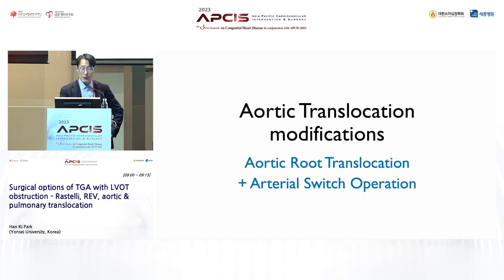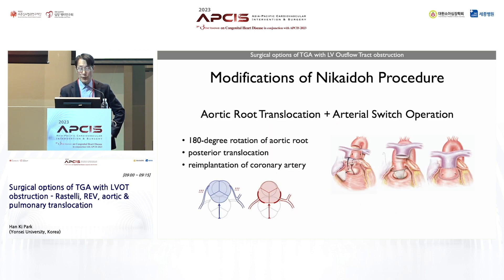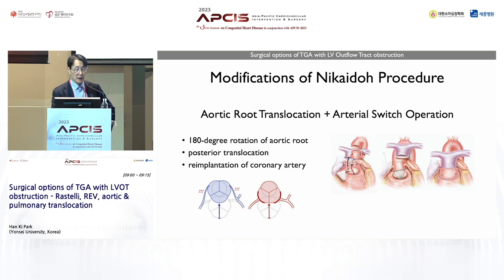There are some modifications of the Nikaido procedure. As mentioned, if the patient's pulmonary valve size is moderate, there is a risk of overstretching the coronary artery. To minimize the risk of coronary artery compromise, another technique has been suggested. After taking out the aortic root, it is rotated 180 degrees and re-implanted on the LV outflow tract, and the coronary artery buttons are re-implanted on the neo-aortic root, similar to the re-implantation technique used in the arterial switch operation. This technique allows us to avoid or reduce the risk of coronary artery overstretching or kinking.